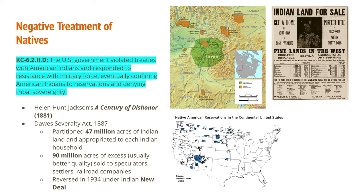The Dawes Severalty Act of 1887 partitioned 47 million acres of Indian land and gave set amounts to each Indian household, hoping to force them to take up agriculture. Ninety million acres remained after the partition and the better-quality plots were sold to speculators, settlers, and railroad companies — an advertisement for this leftover Indian land is visible in the top right. This act was finally reversed in 1934 under FDR's Indian New Deal, but by that point much of the damage had already been done.